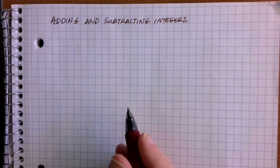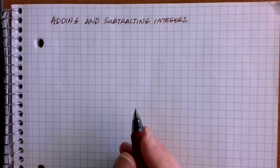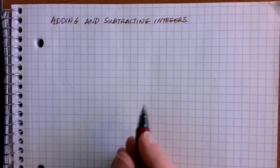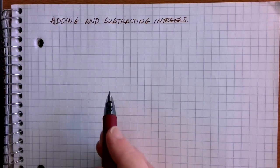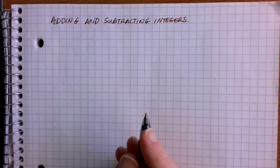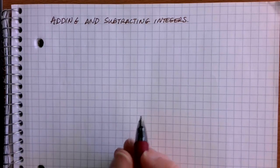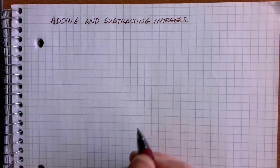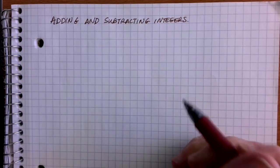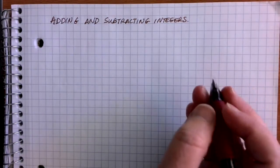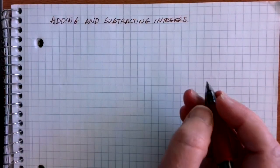The rules for adding and subtracting positive and negative numbers are very different than the rules for multiplying and dividing negative numbers. So let's go through and figure out what our procedures are anytime that we want to add and subtract integers, or any positive and negative numbers at all.